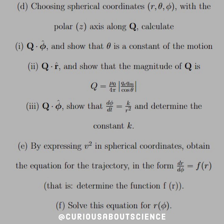Part E: by expressing V-squared in cylindrical coordinates, obtain the equation of the trajectory in the form dr/d-phi equals F of R, determine what F of R is, and then solve this equation for R(phi). All right, we've got our work cut out for us, so let's dive in.